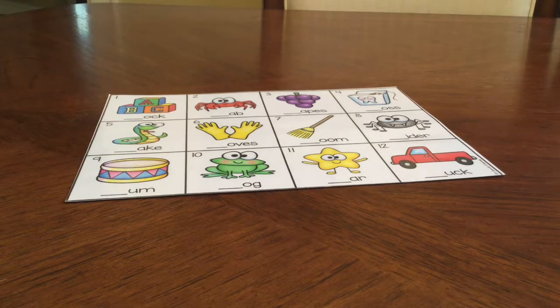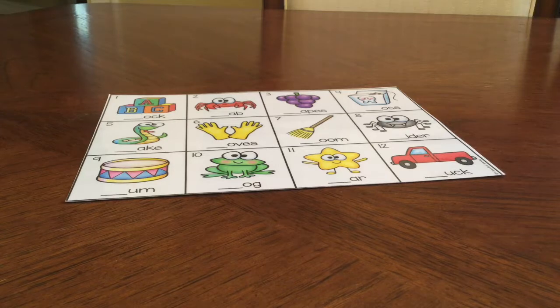Number one are blocks. Number two, crab. Three, grapes. Four, floss. Five, snake. Six, gloves.